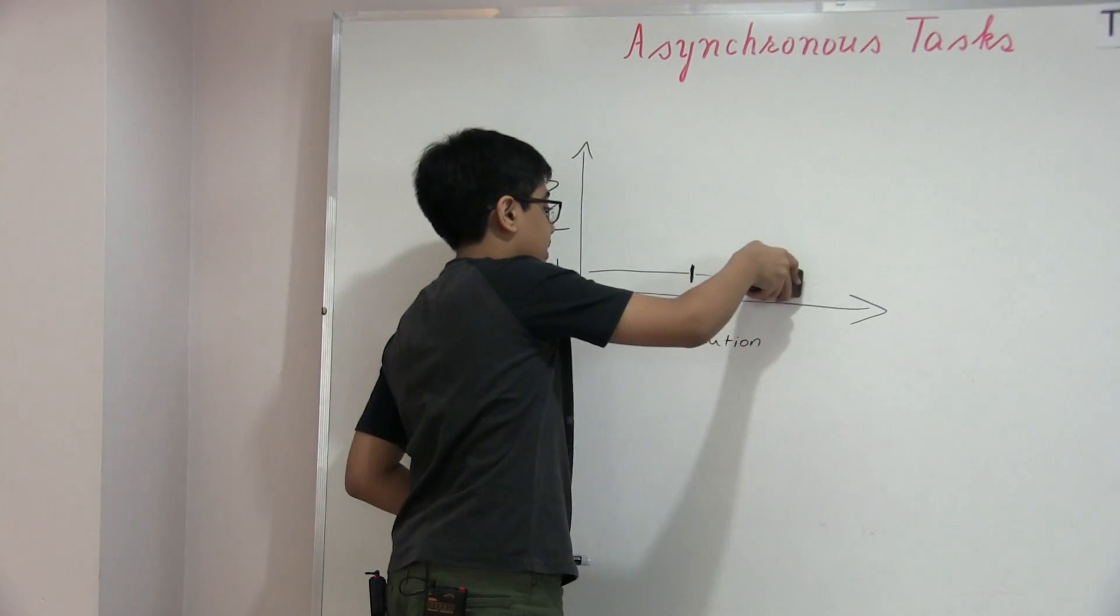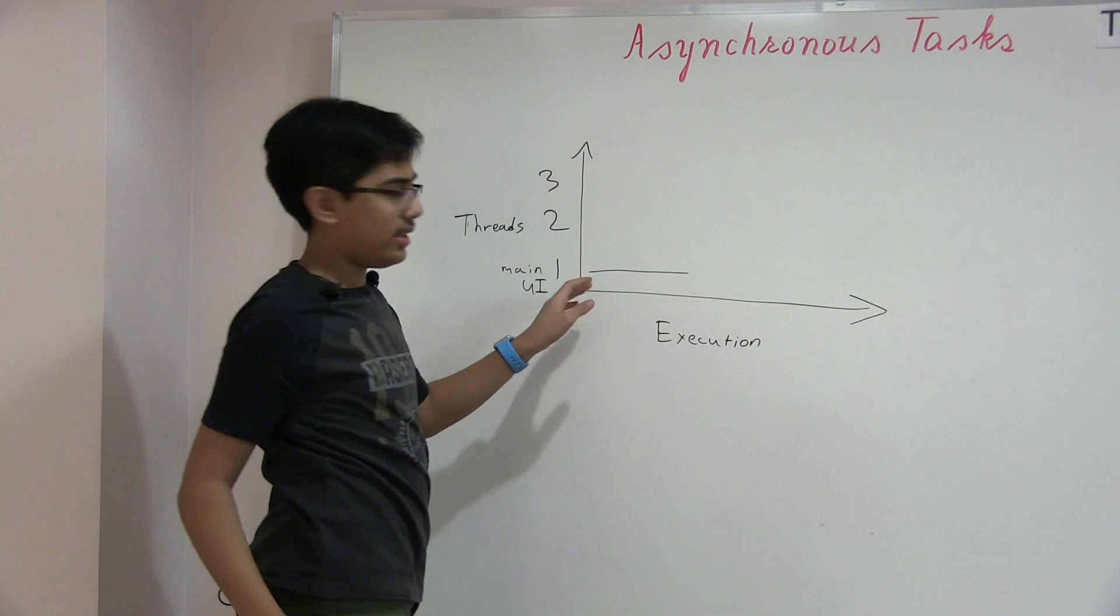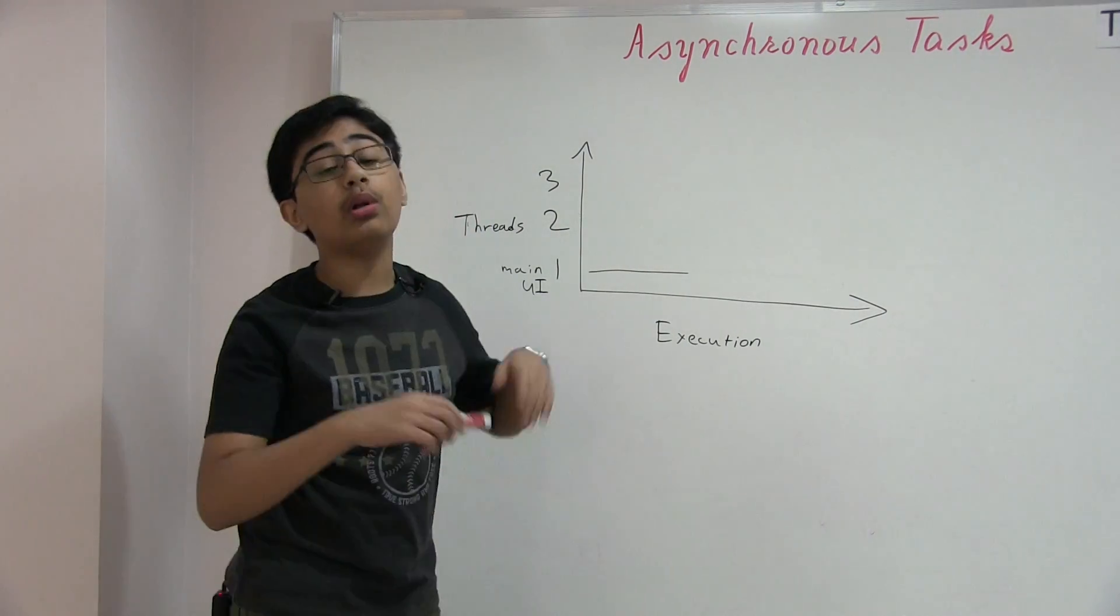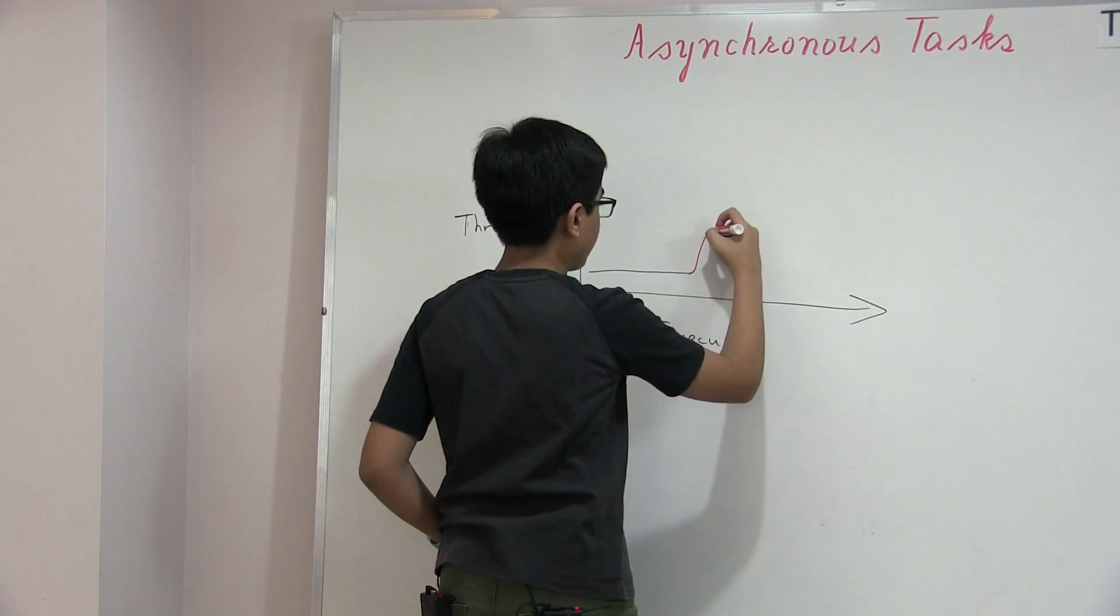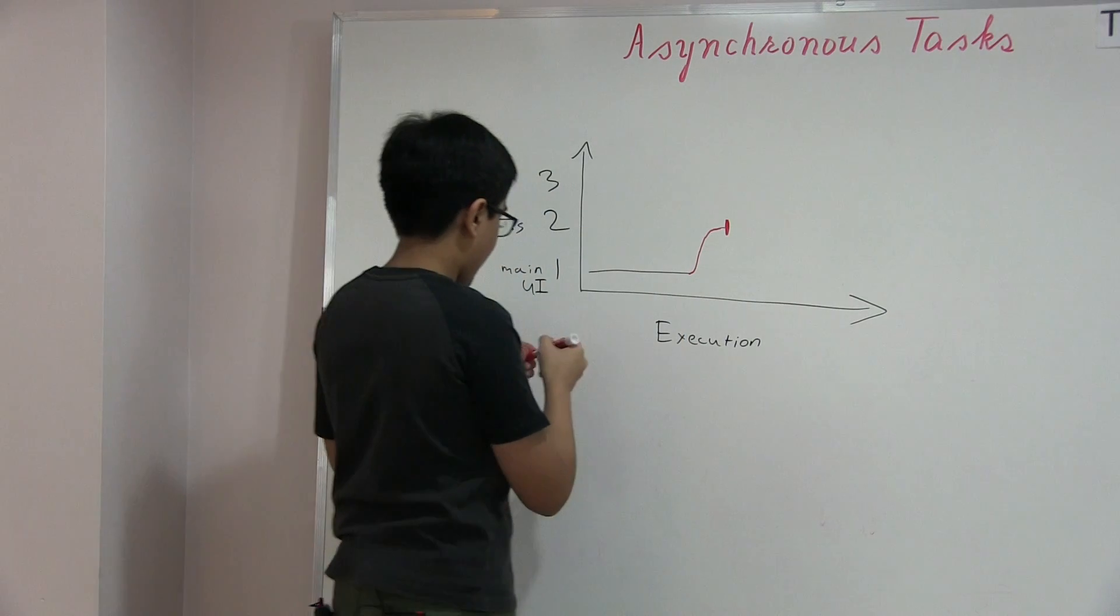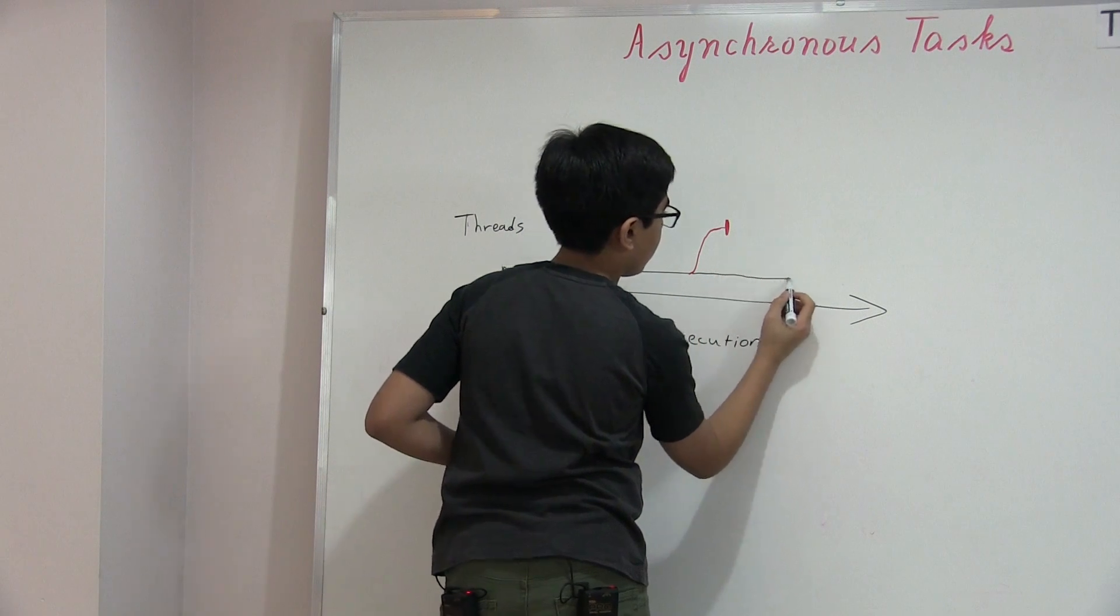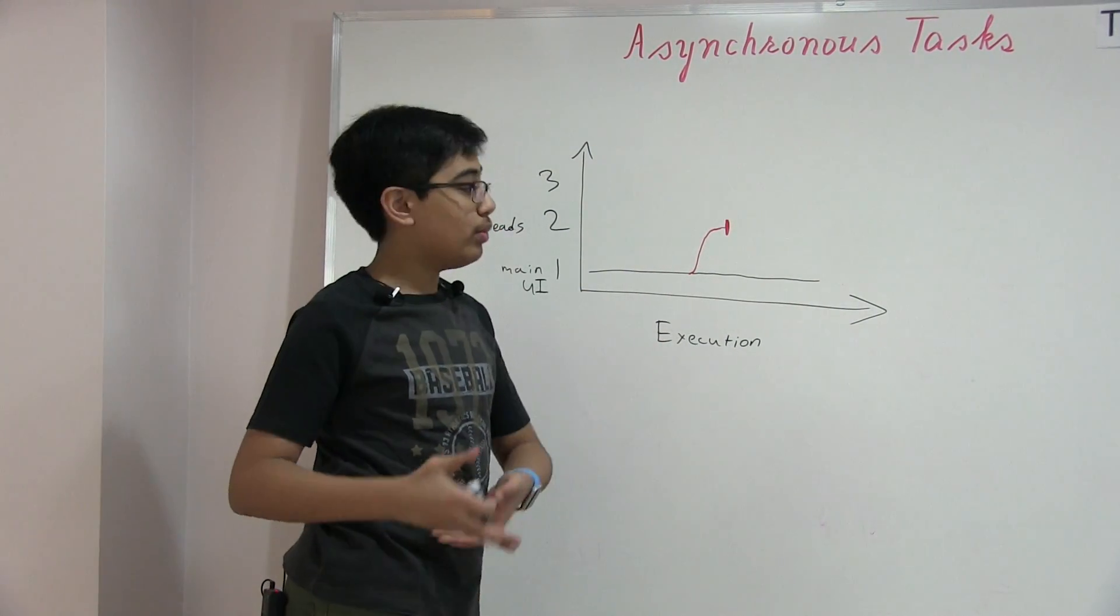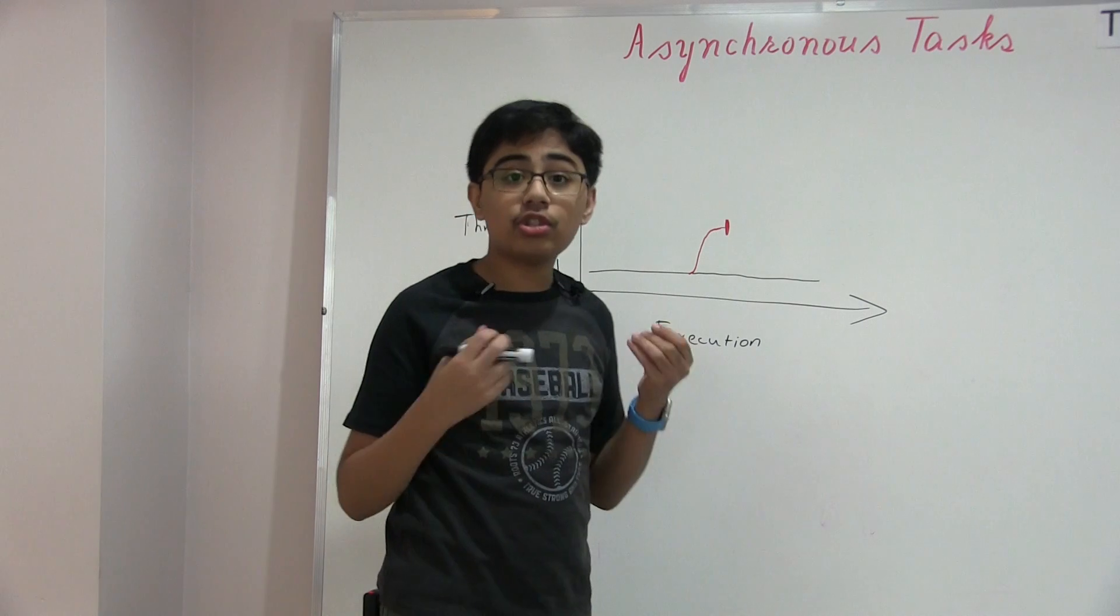Basically, threads number two and three here are things called background threads. They're threads that the UI doesn't run on, meaning that by default there's nothing running on them. That also means that if you were to run something long-running on thread number two, number one would just keep going on in terms of execution and would not be affected. Let's actually take a look at that.